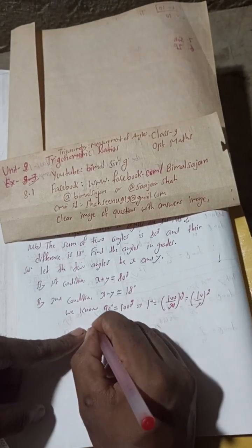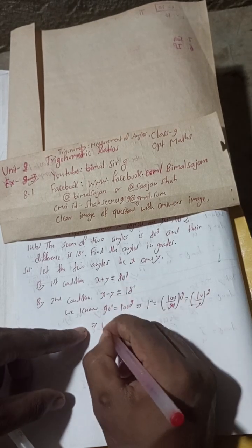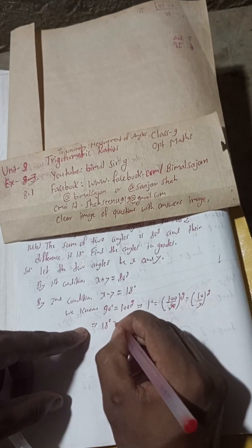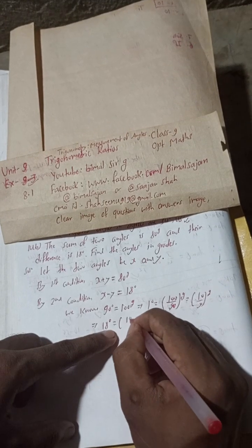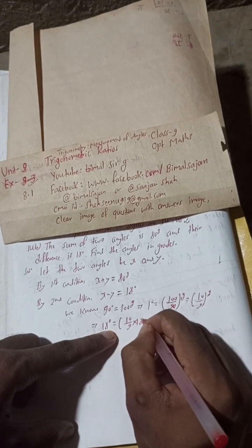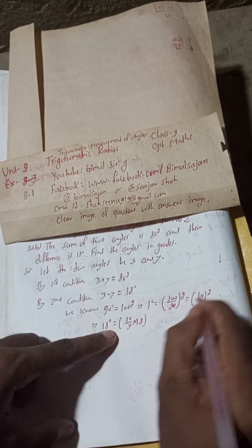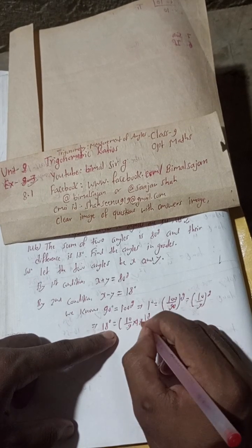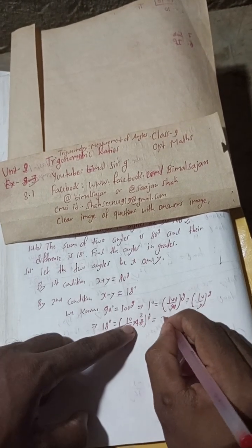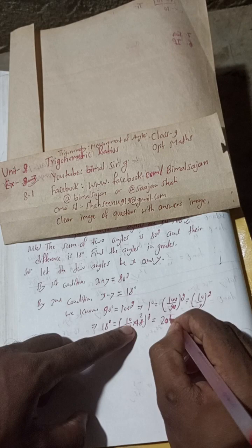This implies that 18 degree is equal to 10/9 into 18 grade. 2 times 9 is 18, so this will be 10 times 2 equals 20 grade. We got 18 degree equals 20 grade.